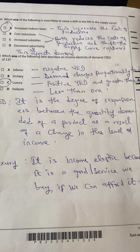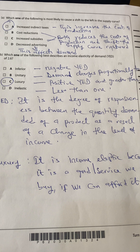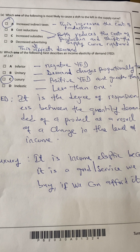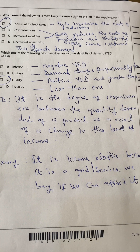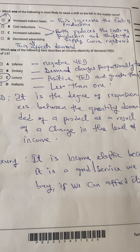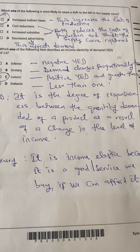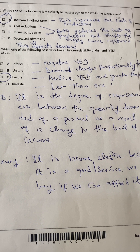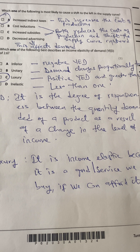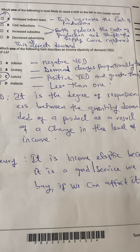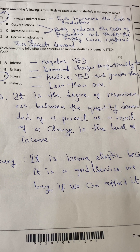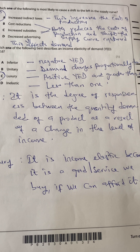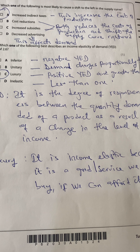Which one of the following is most likely to cause a shift to the left of the supply curve? A shift to the left of the supply curve means there's a reduction in the quantity supplied of a product. Increased indirect taxes will increase the cost of production, and if prices cannot be increased, it will shift the supply curve leftward.